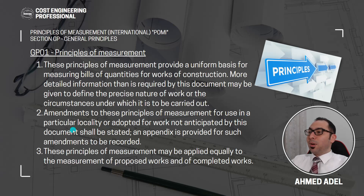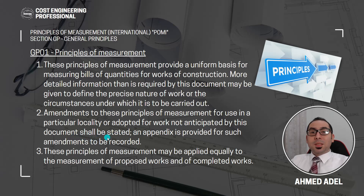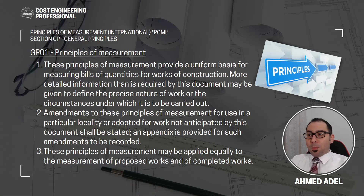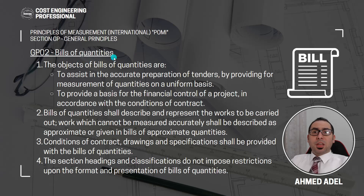Amendments to these principles of measurement for use in a particular locality, or adopted for work not anticipated by this document, shall be stated, and an appendix is provided for such amendments to be recorded. So if you want to change something from POMI due to your local place or the nature of work, you have to state this in the appendix. These principles of measurement may be applied equally to measurement of proposed works or completed works.